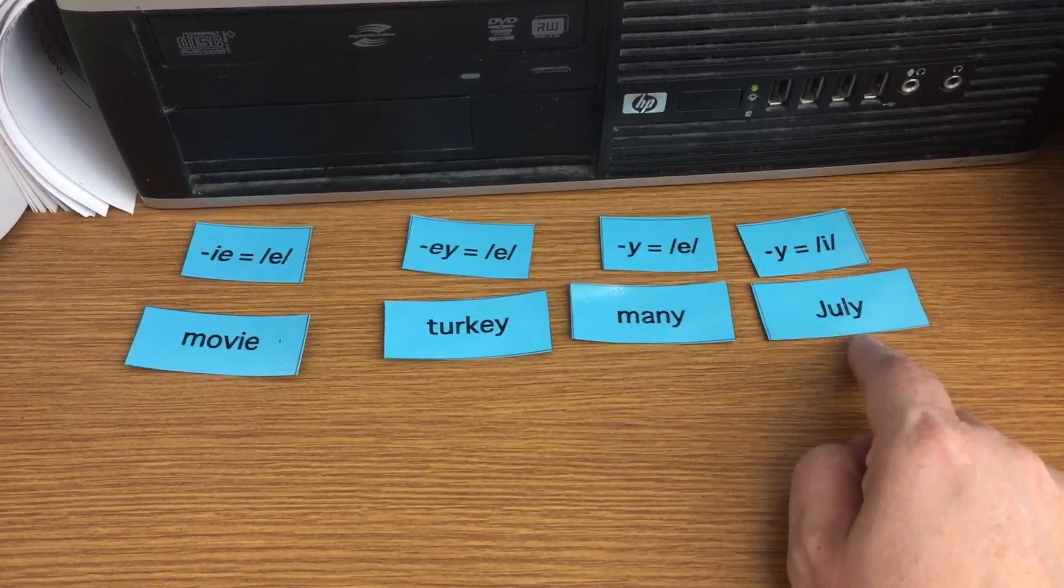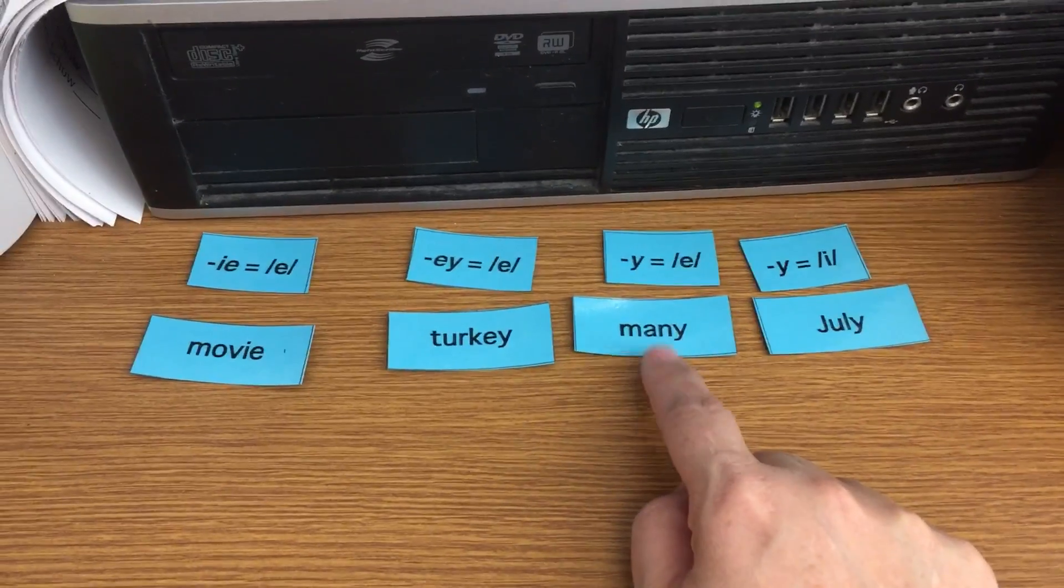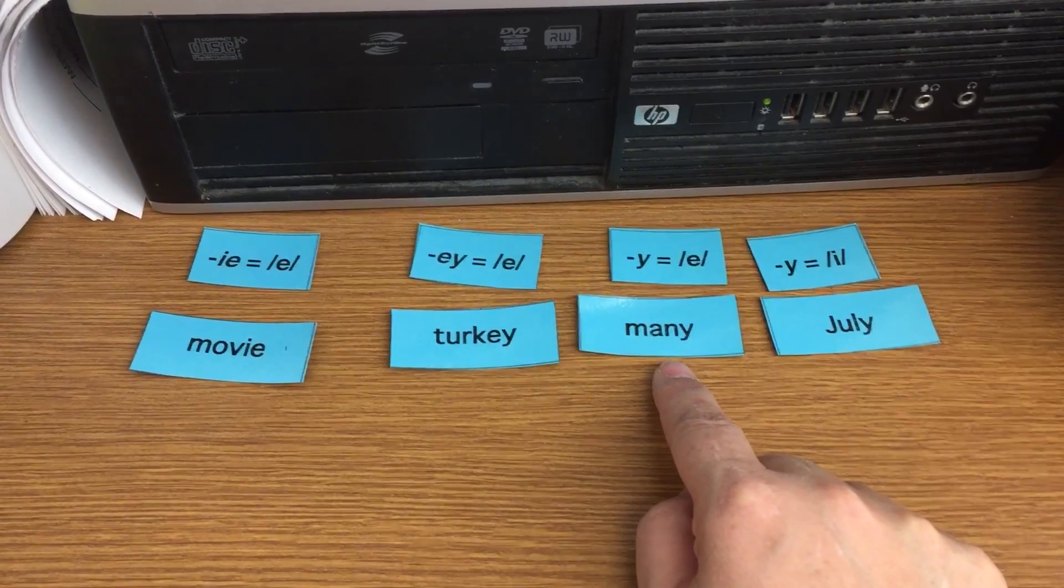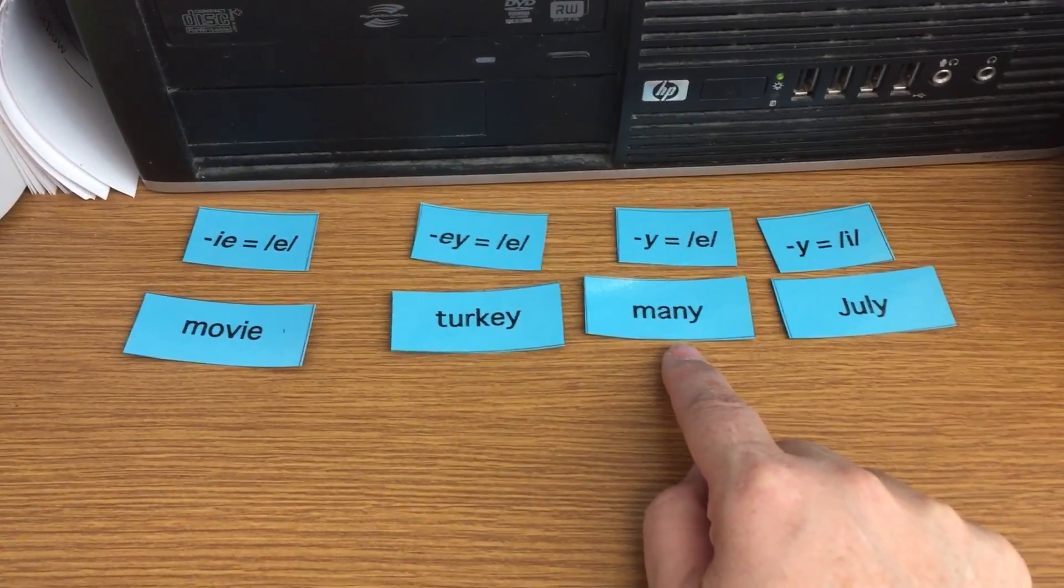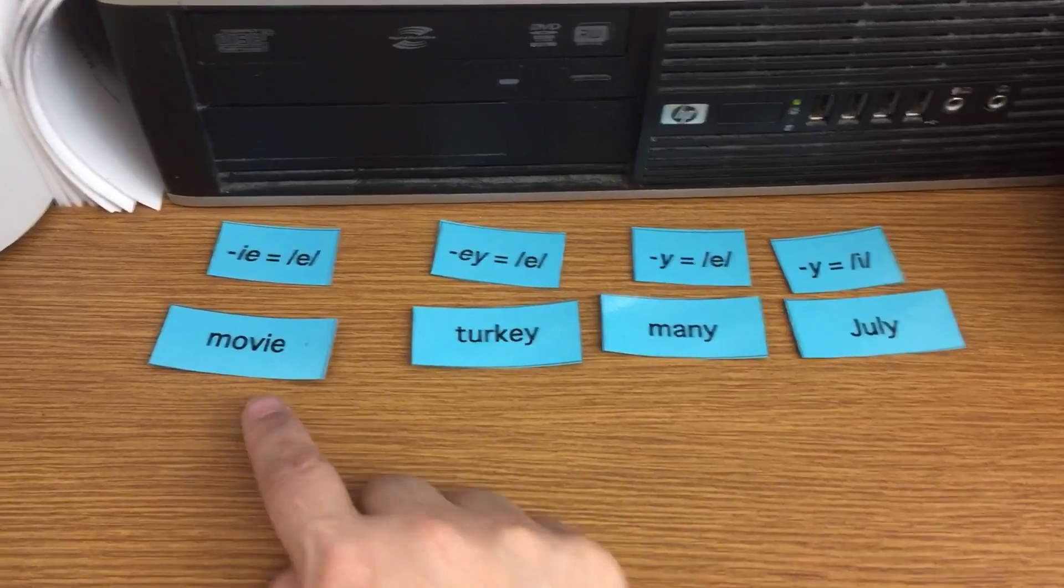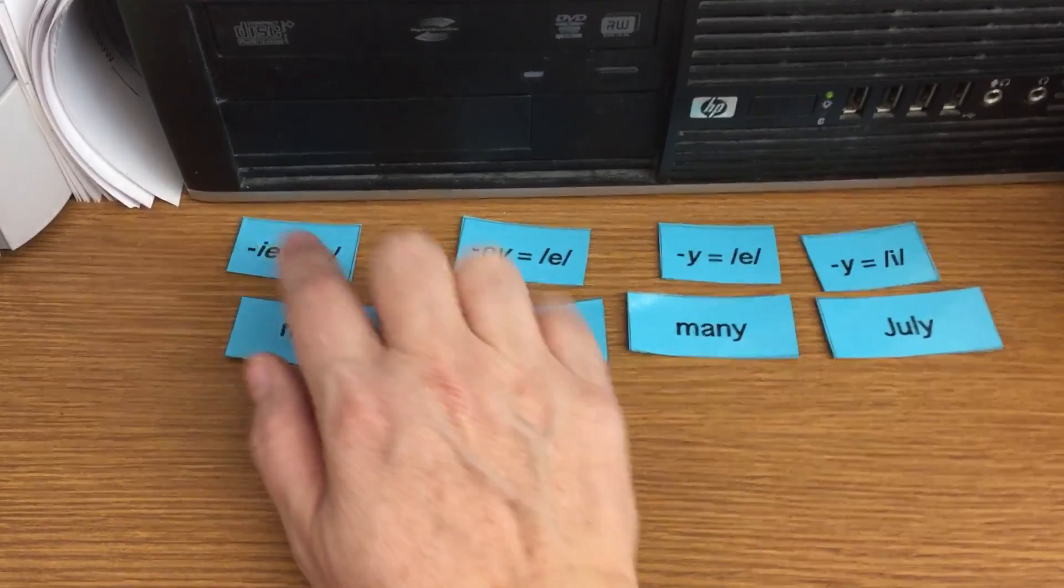and the I sound like July. So July's going to sound different, and it's going to end with just a Y, but there's some of the E sounds, like in many, that also end with a Y. Then you'll have some E sounds with the EY and E sounds with an IE.